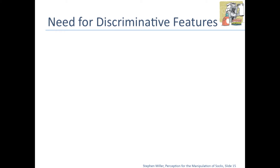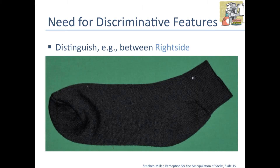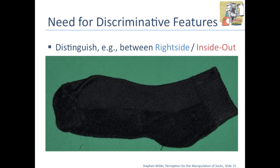Now for the shared strategies: the need for discriminative features is key. To motivate that, imagine you need to distinguish between a right-side-out sock and an inside-out sock. This is a fairly subtle difference — on the projector it looks even more subtle, and on the computer it's still quite subtle. So we're dealing with a patch like this, and we need to be able to tell whether it's inside out or right side out, and answer other queries about it.